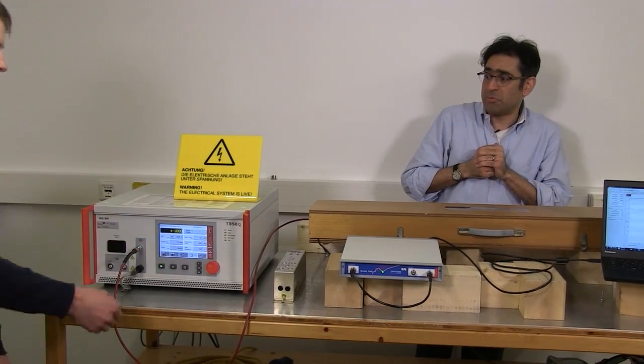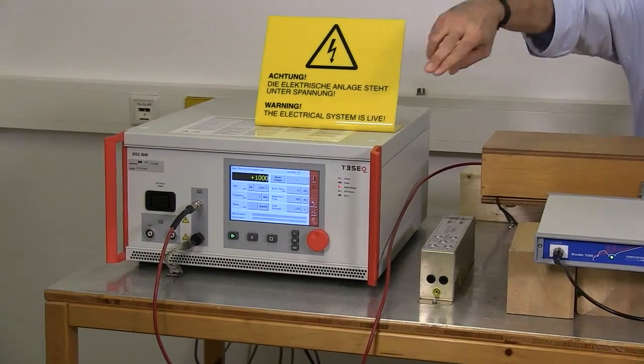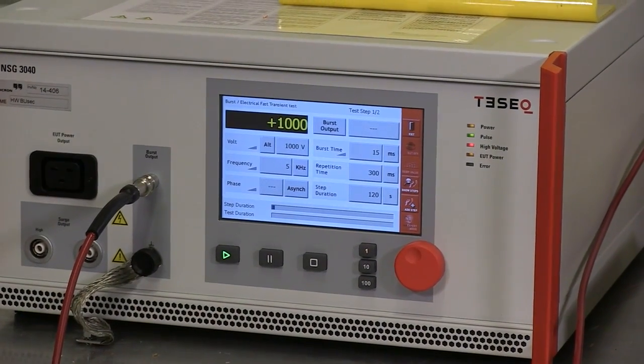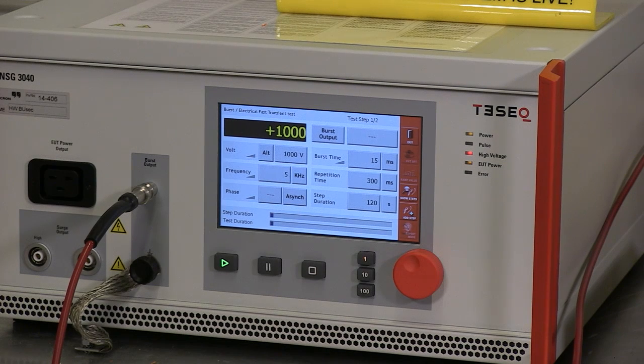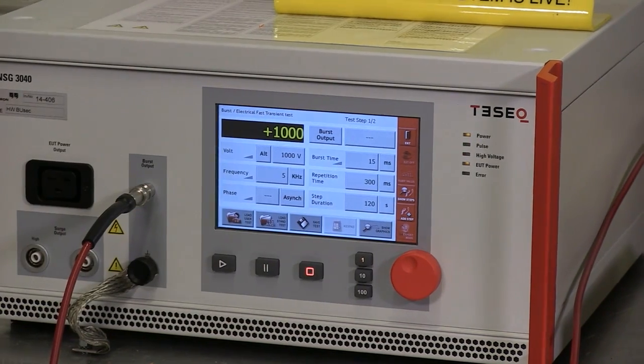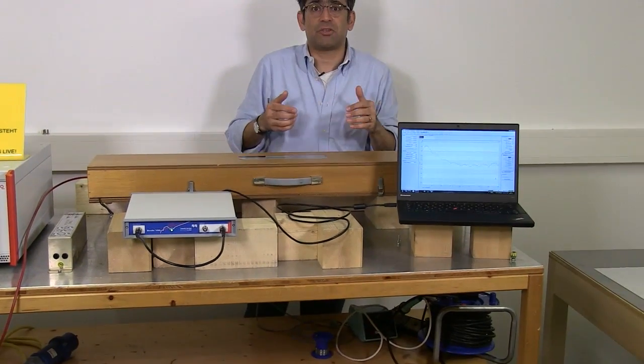So we are now going to start the test. This test typically takes two minutes. And every time you see that LED over there flashing, a burst is going through. So we will not carry on for the entire two minutes, but a few bursts have gone through already. Is that correct? Okay, so can we please just stop?